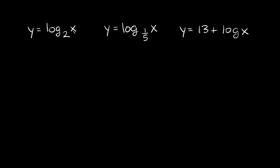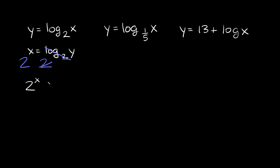Now I'm going to show you how to go the other direction. We have y is equal to log base 2 of x. Again, the first thing you want to do is flip your variables: x is equal to log base 2 of y. Now we're trying to solve for y, so to get rid of this log base 2, you take the base number and rewrite it as 2 raised to the x is equal to 2 raised to log base 2 of y. The 2 and the log base 2 cancel out, so we're left with 2 raised to the x is equal to y. That's your inverse function.